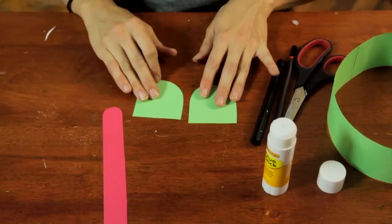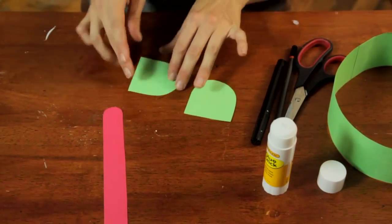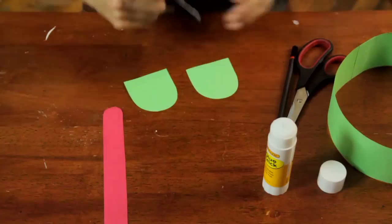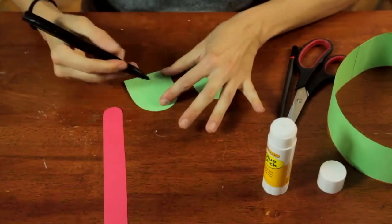And as you can see, I've got these sort of U-shaped pieces here. These will be the eyes, but we've got to draw a little bit on them.